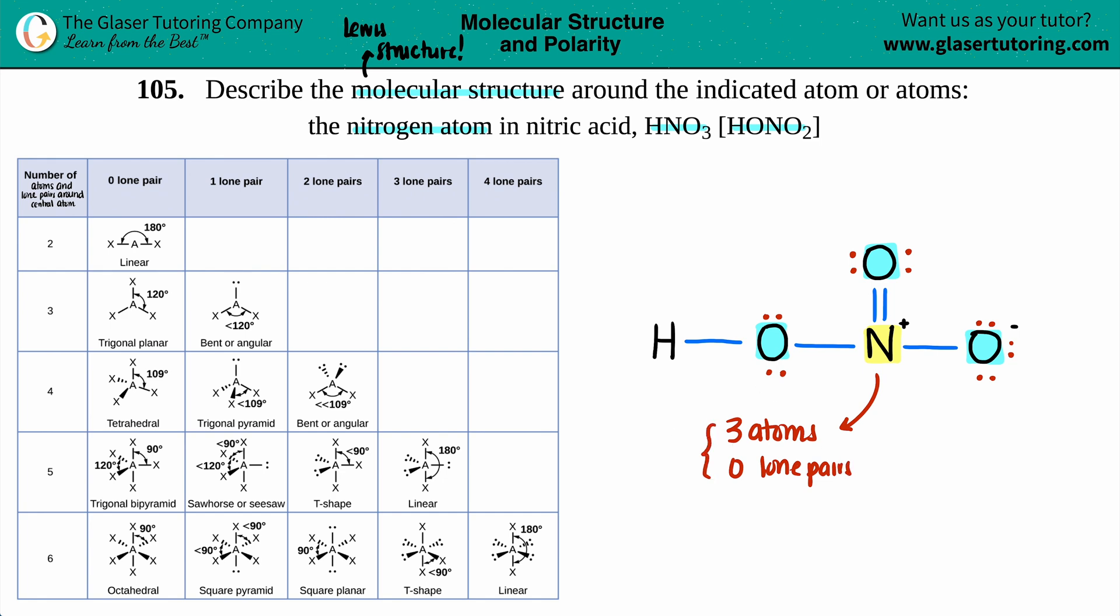You add them together to find the total. So three plus zero is three. And that's the number that we are using for the general number to just find out what category we're in. So we're in this tier right here. But now you have different variations. You either have a zero or one lone pair. And since we had zero, we are in trigonal planar mode. So the nitrogen, the molecular geometry for nitrogen would be trigonal planar.